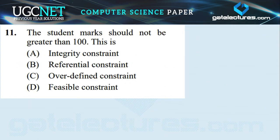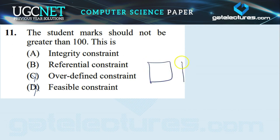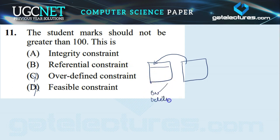Question number 11: The student mark should not be greater than 100 — this is what type of constraint? Options: integrity constraint, referential constraint, overdefined constraint, or feasible constraint. The last two options are not used in DBMS; they are used in software engineering, so they can be eliminated. Referential constraint is useful when there are two tables and one column is a reference column that refers to another table. In referential constraints, triggering actions include ON DELETE and ON UPDATE.